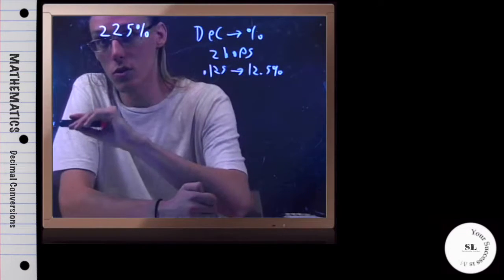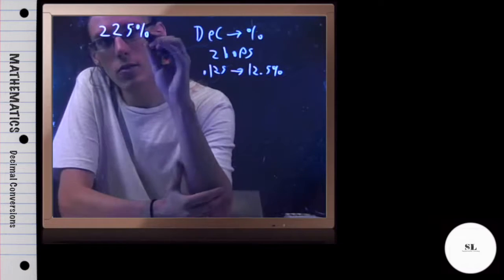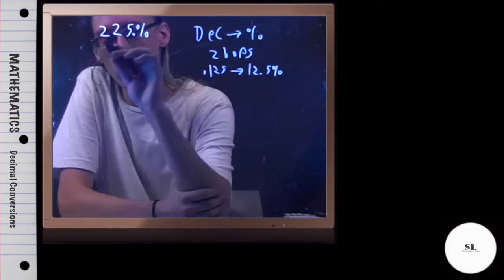Where is the decimal to start with? If they don't put it here explicitly, it's always at the very end of the number, 225.